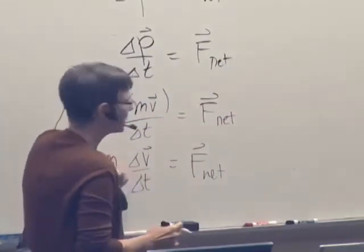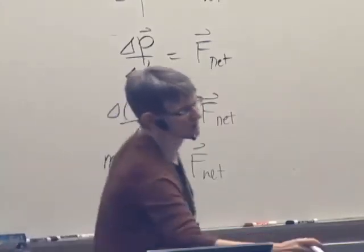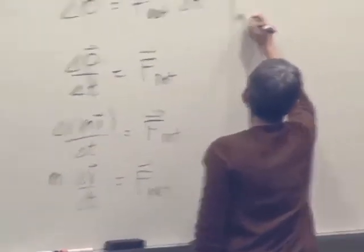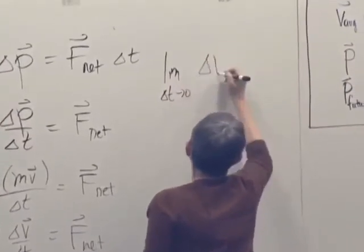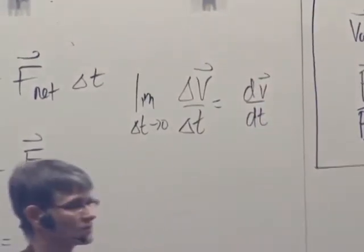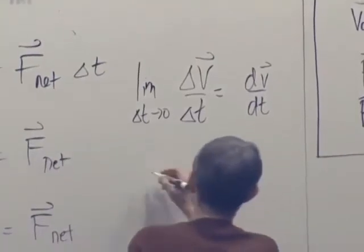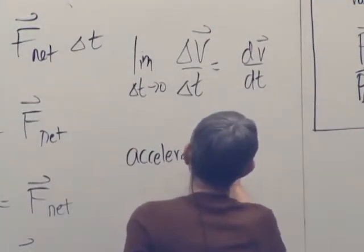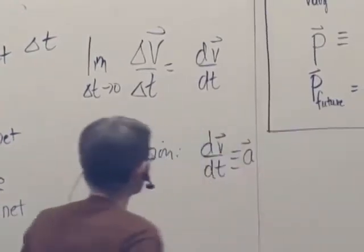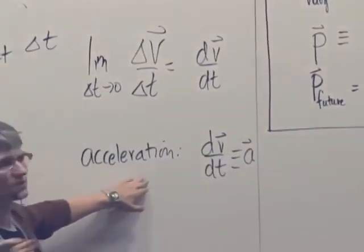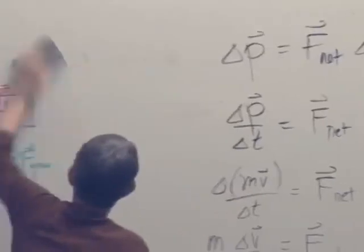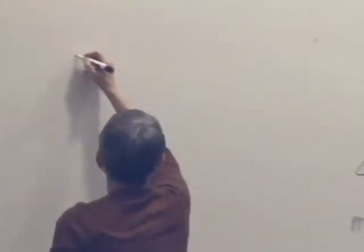So basically we're saying that the rate of change of the velocity is equal to the net force. So if we take the limit as delta T goes to zero of delta V over delta T, we get dV/dt which is a rate of change of velocity. This has a name. It's called acceleration. And it's sometimes written as an A vector.